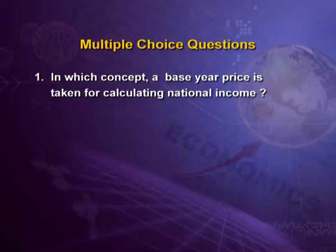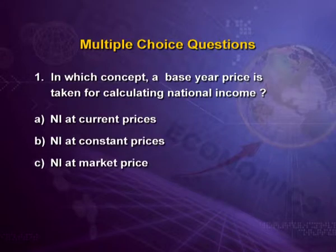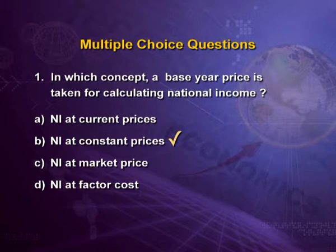First question: in which concept is a base year price taken for calculating national income? Options are: national income at current prices, national income at constant prices, national income at market price, and national income at factor cost. The answer is national income at constant prices, because we take base year price in national income at constant prices.